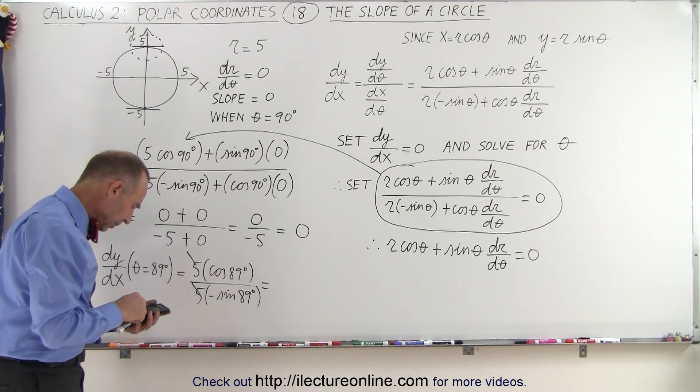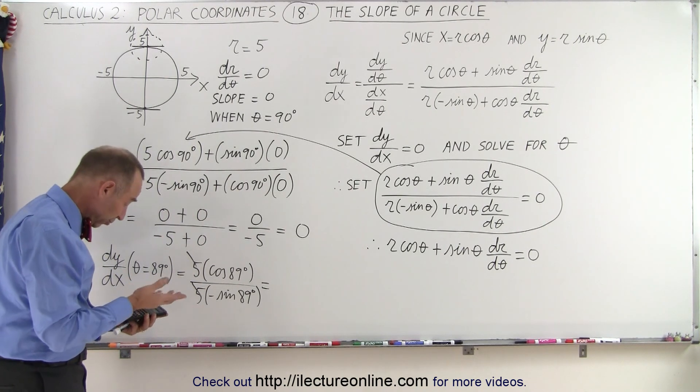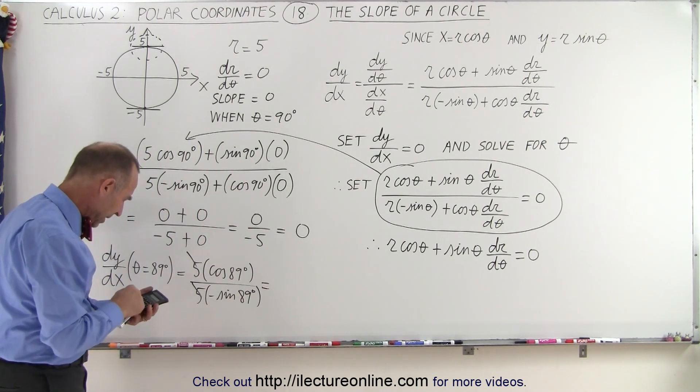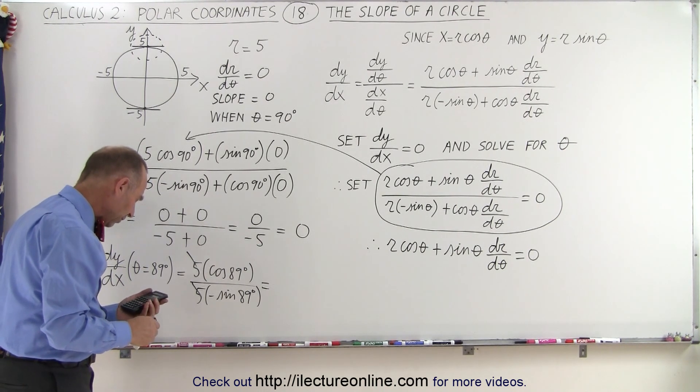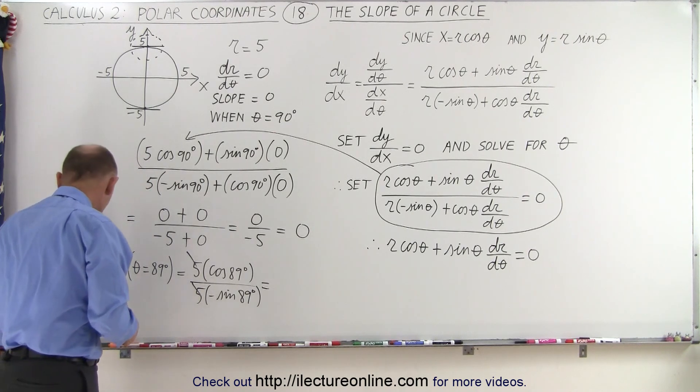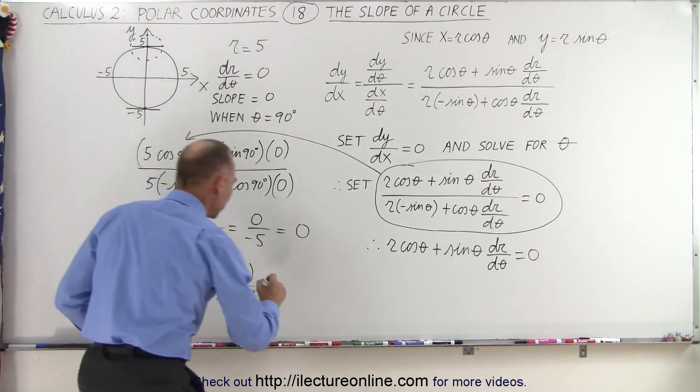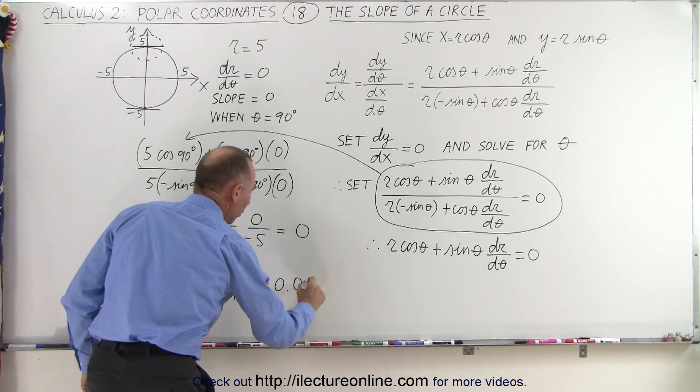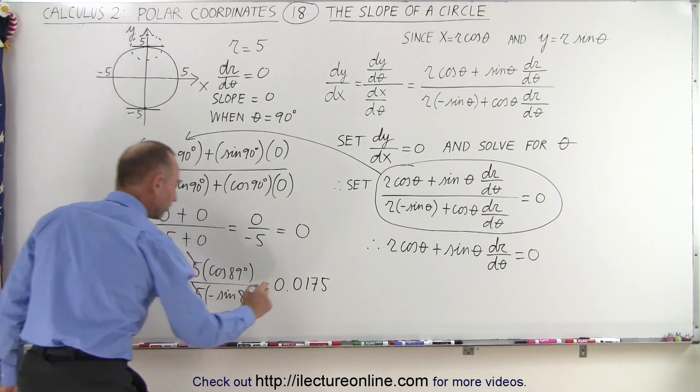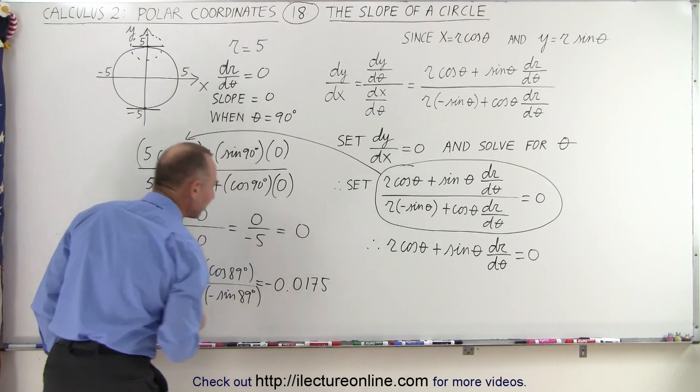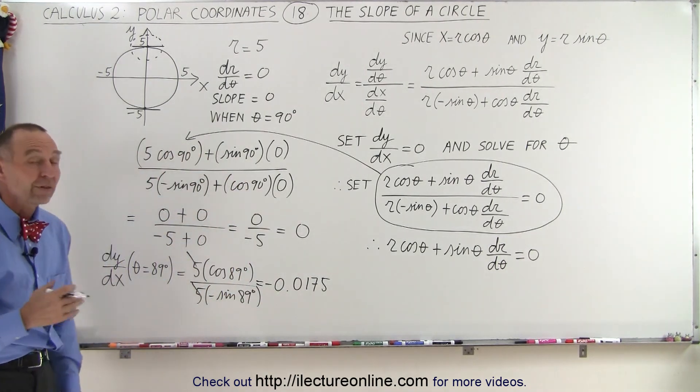So take 89, the cosine of that, which should be a fairly small number, divide by 89 times the sine and divide by negative. And so we get 0.017, let's say you get 175. So this would be 0.0175 for the slope. And because of the negative sign here, make sure that we include the negative sign. So it's a negative 0.0175.